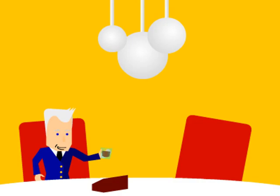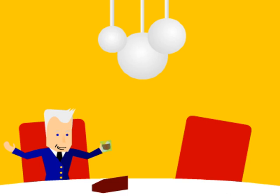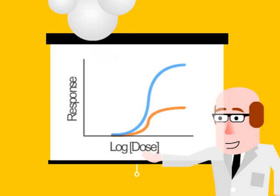So let's make sure I've got this straight. The further to the left the curve is, the more potent it is? Correct. And the higher the curve reaches on the graph, the more effective it is? Also correct. Well, excellent.